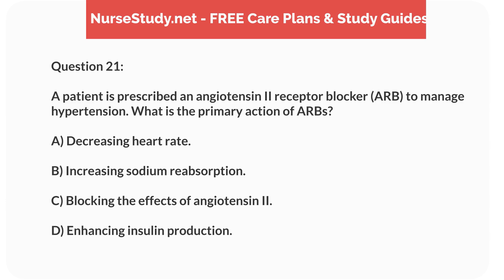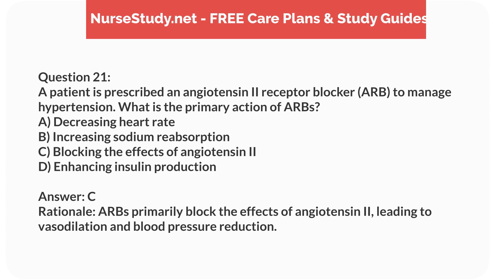Question 21. A patient is prescribed an angiotensin-2 receptor blocker (ARB) to manage hypertension. What is the primary action of ARBs? A. Decreasing heart rate. B. Increasing sodium reabsorption. C. Blocking the effects of angiotensin-2. D. Enhancing insulin production. Answer: C. Rationale: ARBs primarily block the effects of angiotensin-2, leading to vasodilation and blood pressure reduction.